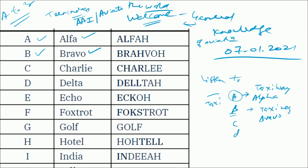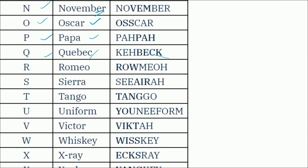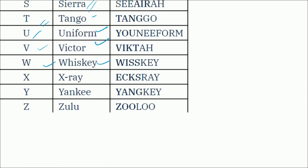So we'll be discussing all the way up to Z. Starting: A is Alpha, B is Bravo, C is Charlie, D is Delta, E is Echo, F is Foxtrot, G is Golf, H is Hotel, I is India, J is Juliet, K is Kilo, L is Lima, M is Mike, N is November, O is Oscar, P is Papa, Q is Quebec, R is Romeo, S is Sierra, T is Tango, U is Uniform, V is Victor, W is Whiskey, X is X-ray, Y is Yankee, Z is Zulu.